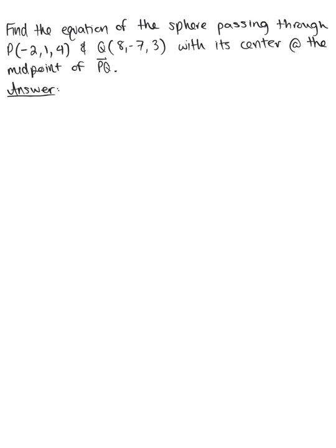Find the equation of a sphere passing through the points P, which is negative 2, 1, 4, and point Q, which is 8, negative 7, 3, with its center at the midpoint of the vector PQ.